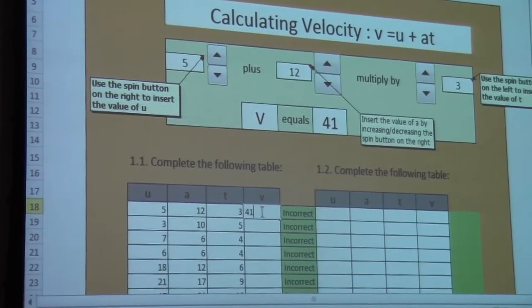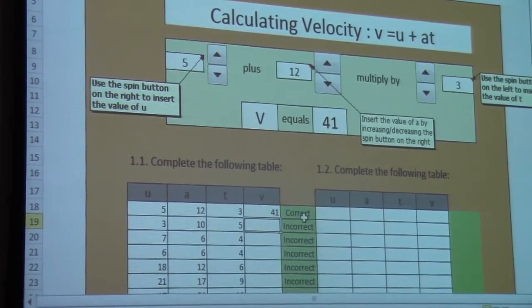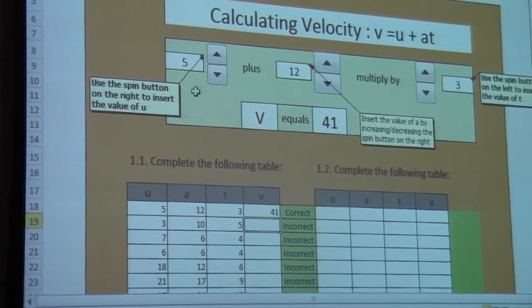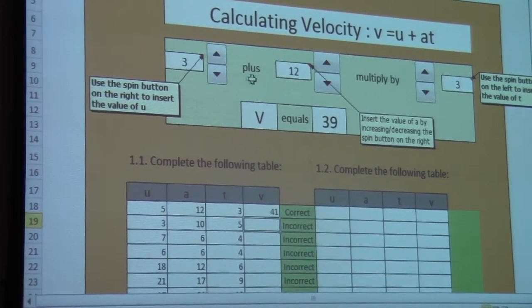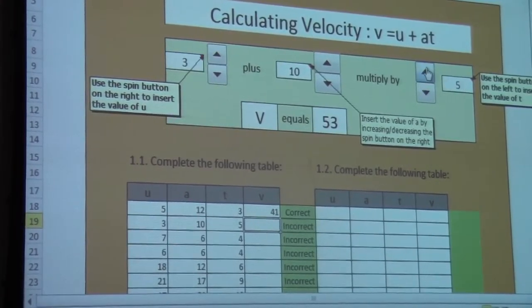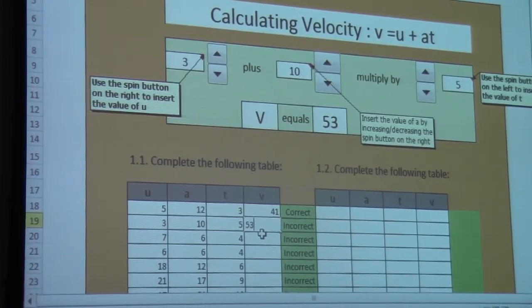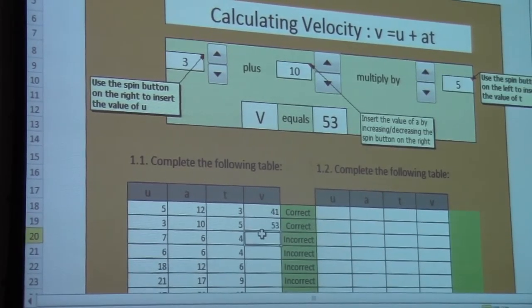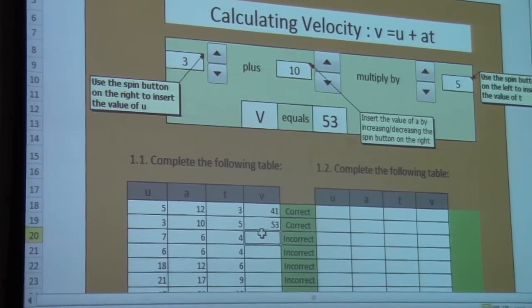As they punch in 41, before they move they already know that it is correct. So the child will also come here and say I got 3, then I got here 10, and then I use 5 there, and then the answer that I get is 53. And then you punch in 53, and then before you proceed you know that it is correct.